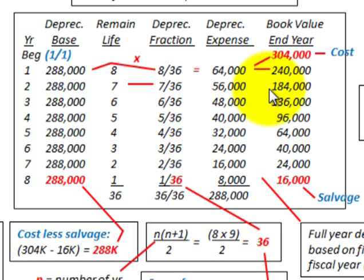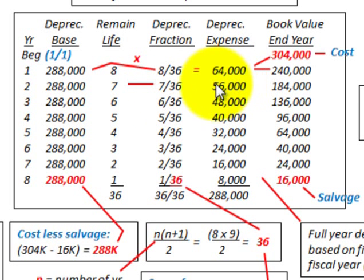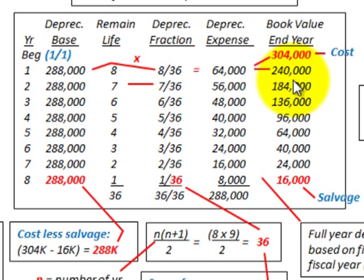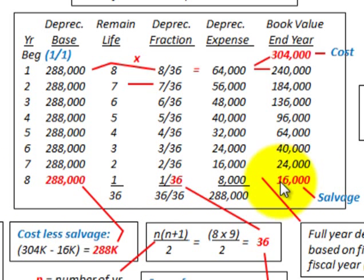We continue in the same fashion for each subsequent year. For year 2, the remaining life is 7 years, so the fraction is 7/36 times the depreciation base, giving us $56,000 depreciation expense. Subtracting $56,000 from the beginning book value of $240,000 gives us $184,000. With the sum of the years method we have a decreasing depreciation charge. Notably, at the end of year 8, the book value is $16,000, which is our salvage value. That takes care of step 1.